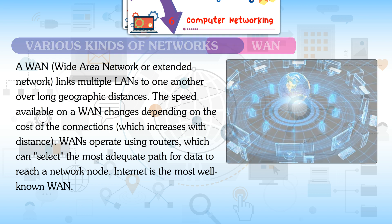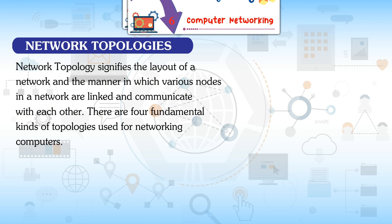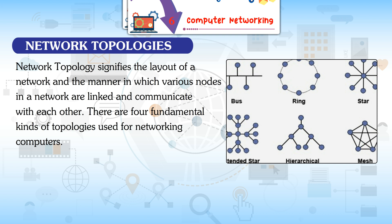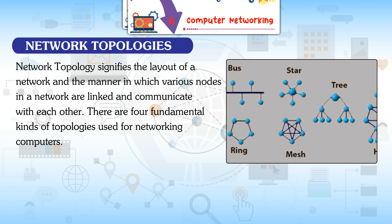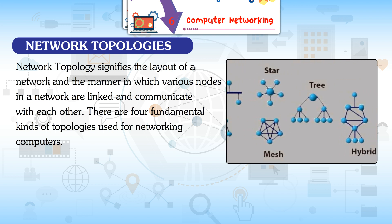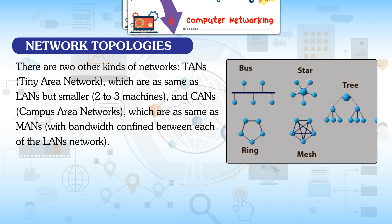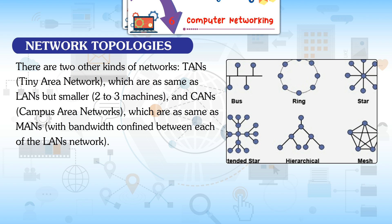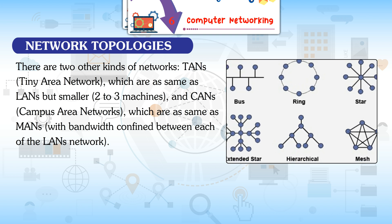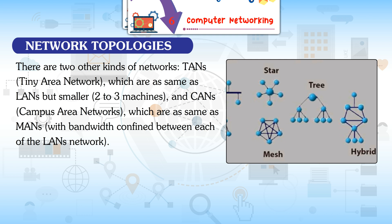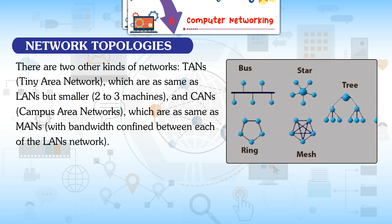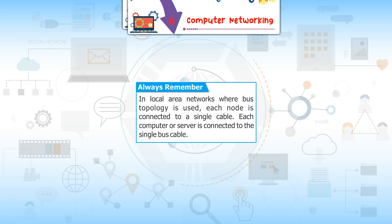The Internet is the most well-known WAN. Network topology signifies the layout of a network and the manner in which various nodes are linked and communicate with each other. There are four fundamental kinds of topology used for networking computers. Two other kinds include TANs (Tiny Area Networks), which are like LANs but smaller with two to three machines, and CANs (Campus Area Networks), which are like MANs with bandwidth confined between each LAN. In bus topology, each node is connected to a single cable.